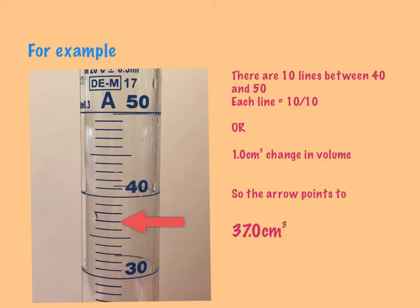So that was 30, 31, 32, 33, 34, 35, 36, 37. So if it's exactly there—the bottom meniscus is exactly on that line—I would have 37 cm cubes of liquid.